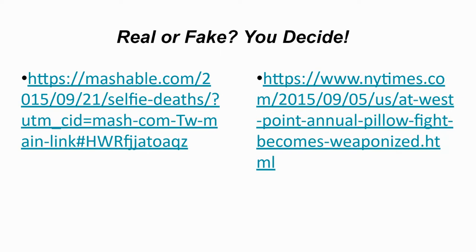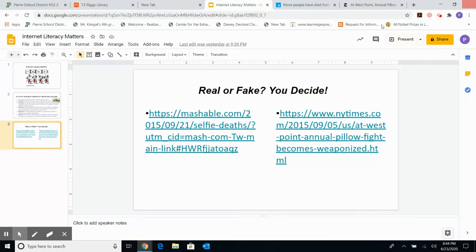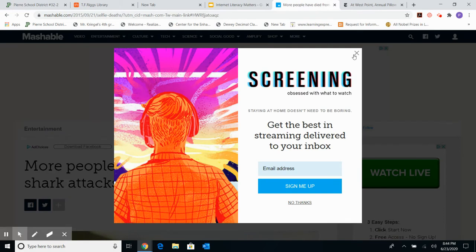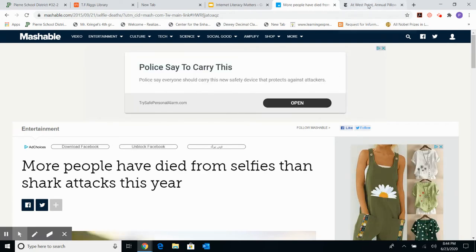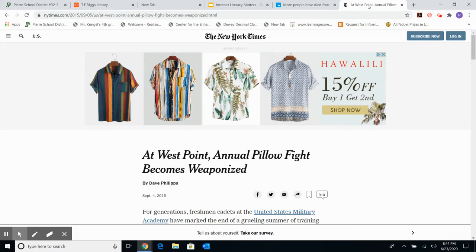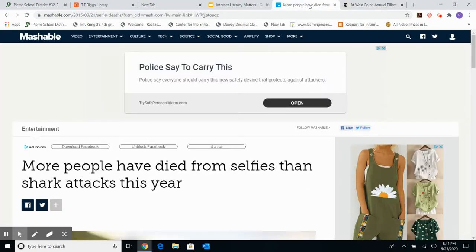Today we're going to use the CARP method to evaluate two different sites and then determine which one is more reliable. We always need evidence to point to rather than just a gut feeling. The first site is from Mashable — it says 'More people have died from selfies than shark attacks this year.' The second is from the New York Times — 'At West Point, annual pillow fight becomes weaponized.' Go ahead and open both sites and start evaluating them.